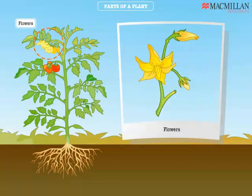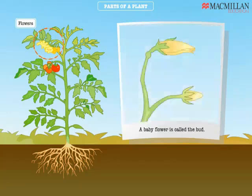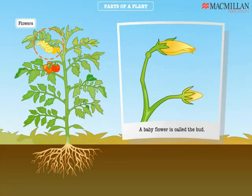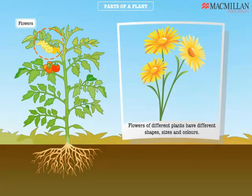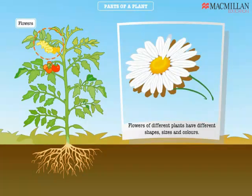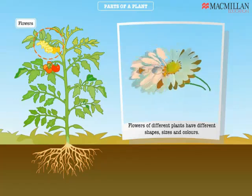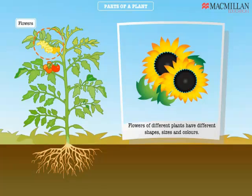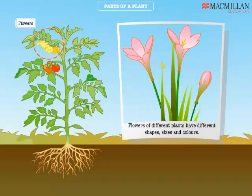This beautiful yellow part is the flower. A baby flower is called the bud. Flowers of different plants have different shapes, sizes and colours.